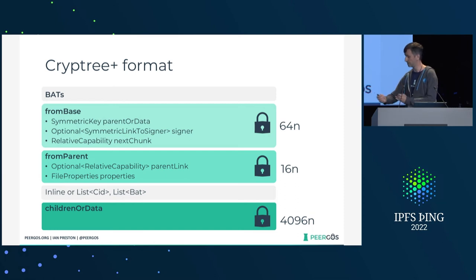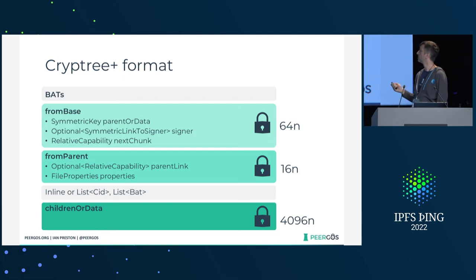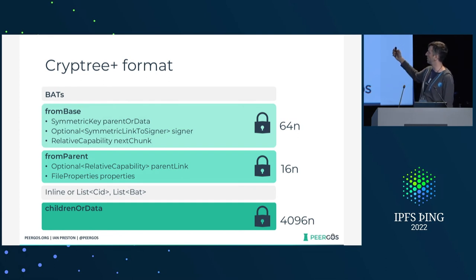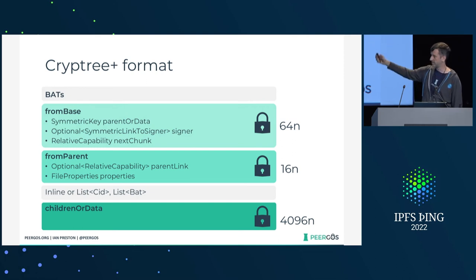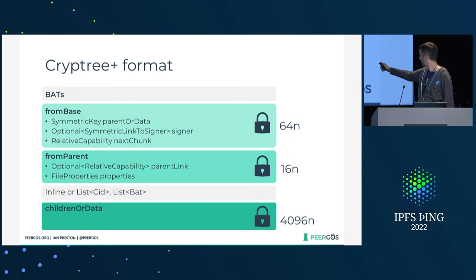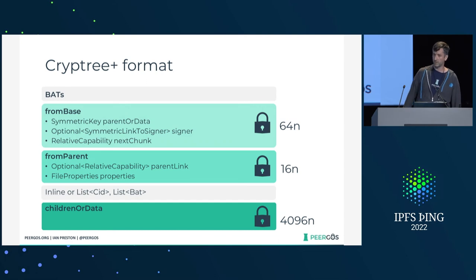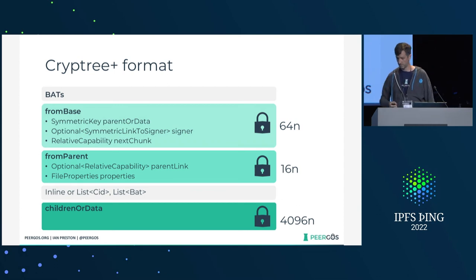This is how the Cryptree format looks. The Cryptree node itself is a DAG CBOR node, and there are basically three independently encrypted bits. The first two are quite small and relate to the structure of the Cryptree, while the third holds actual data — like children if it's a directory, or the data of the file itself. There are also these BATs. If a file or directory is under 4K — which most directories are — we inline it, so you don't have to do any other network requests.